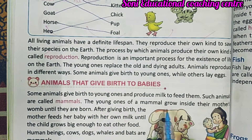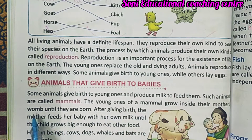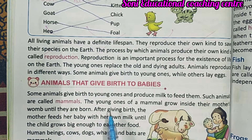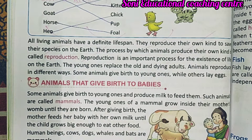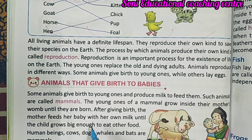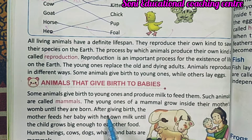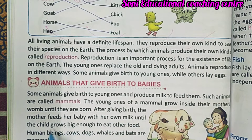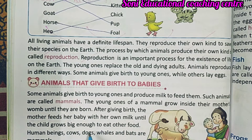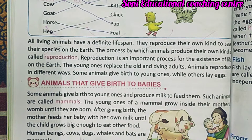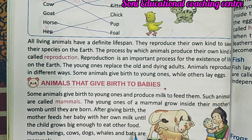The young ones of a mammal grow inside their mother's womb until they are born. जो mammals होते हैं, उनके बच्चे अपनी माँ के गर्भ के अंदर ही पलते हैं, जब तक वो पैदा नहीं होते। After giving birth, the mother feeds her baby with her own milk until the child grows big enough to eat other food — माँ अपने बच्चे को तब तक दूध पिलाती है, जब तक कि वो बड़ा होकर कुछ दूसरा खाना खाने नहीं लग जाता।